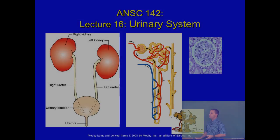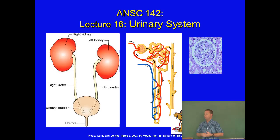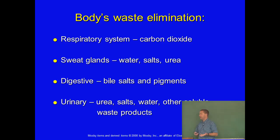Today we're going to talk about the urinary system, which is important because it's a filtering system. What are we filtering? Blood. So it's a way to filter the blood and remove waste products from the blood. We have other waste removal systems in the body as well — the respiratory system gets rid of extra carbon dioxide.